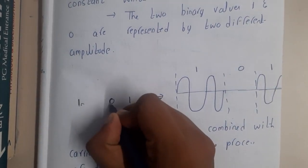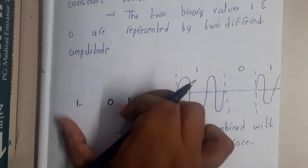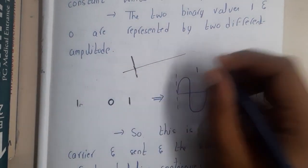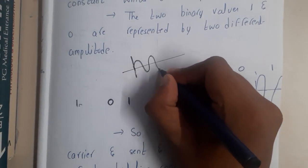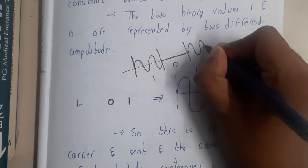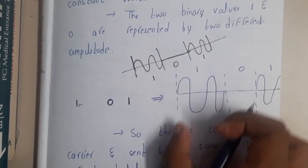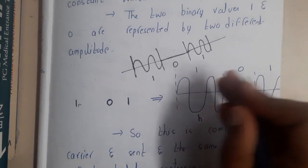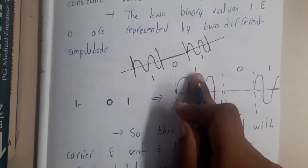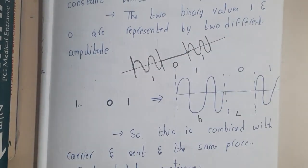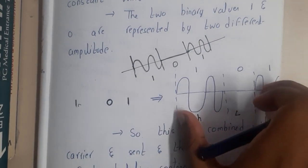This is our binary data — zeros and ones. So one, zero, one is our data. How can you represent this data using Amplitude Shift Keying? The amplitude will be varying. I am assuming a high amplitude as one, no amplitude as zero, and again a high amplitude as one. So wherever the amplitude is high it is one, wherever it is nil or low it is zero. In this way, converting binary data into an amplitude signal is Amplitude Shift Keying.